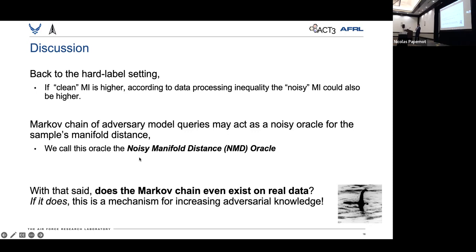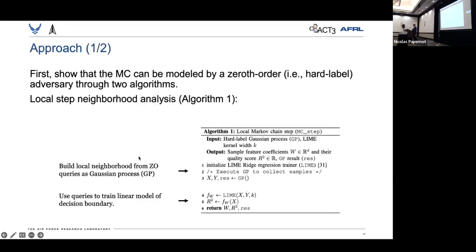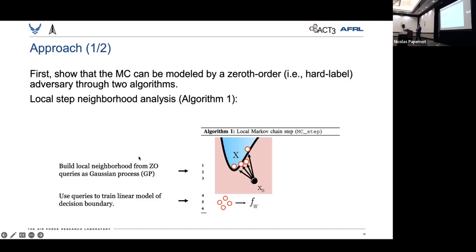We start by designing two algorithms. So the point of these algorithms is to probe whether an adversary can model the transition from manifold to noisy gradients only using the hard-label queries.